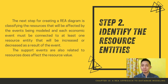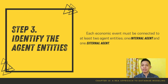The second step is to identify the resource entities. The next step for creating a REA diagram is classifying the resources that will be affected by the events being modeled. Each economic event must be connected to at least one resource entity that will be increased or decreased as a result of the event. Support events are also related to resources that affect the resource value. Step 3 is to identify the agent entities. Each economic event must be connected to at least two agent entities: one internal agent and one external agent.